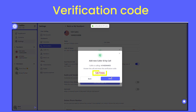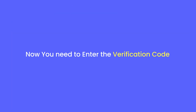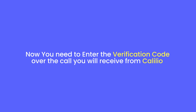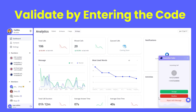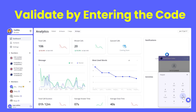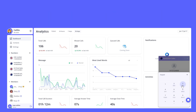You will get a code that you need to verify when you receive a call on your caller ID number. Now you enter the code. Just like that, caller ID is set up successfully.